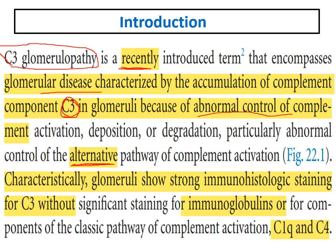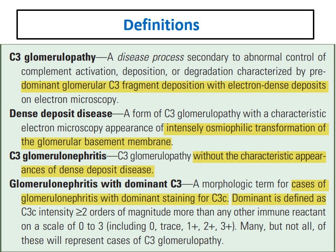This is the pathogenesis which we will talk about in detail. What is characteristic for C3 glomerulopathy is strong immunohistological staining for C3 in the glomeruli without immunoglobulin, C1Q, or C4 — only C3 deposition. This is C3 glomerulopathy. Now, what about definitions?